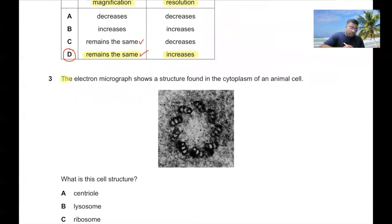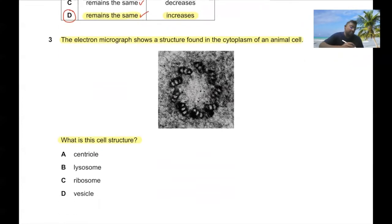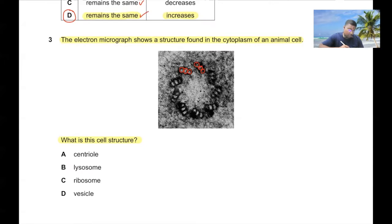Question 3: The electron micrograph shows a structure found in the cytoplasm of an animal cell. This cell structure looks like a centriole, arranged in that particular fashion. So it should be centriole. Option A — centriole. We can also cancel out lysosome; it doesn't look like a ribosome, neither is it a vesicle.